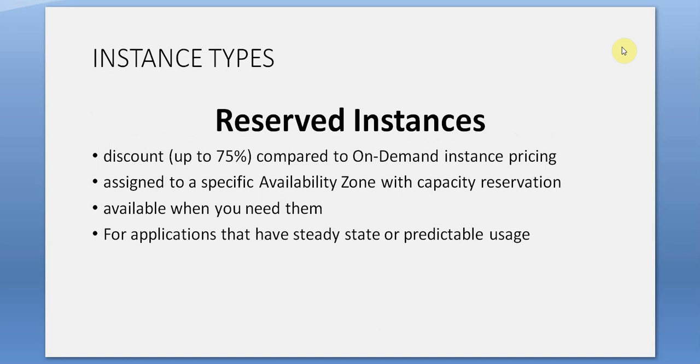Instance Types — Reserved Instances: discount up to 75% compared to on-demand pricing. Assigned to a specific availability zone with capacity reservation, so they're available when you need them. Best for applications that have steady-state or predictable usage.